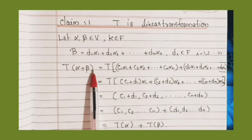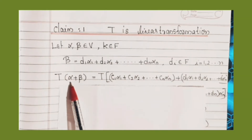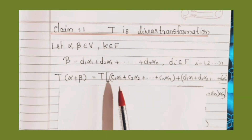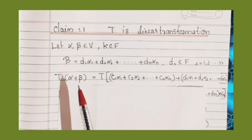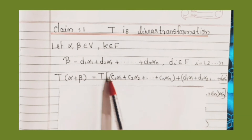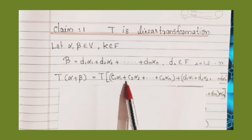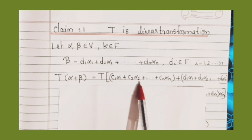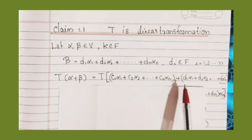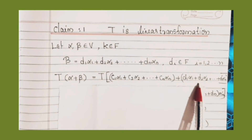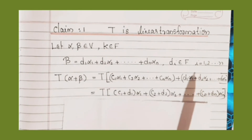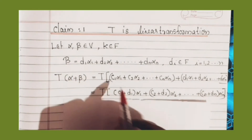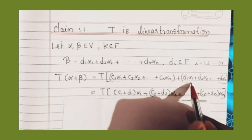Consider T(α + β). We write α = c₁α₁ + c₂α₂ + ... + cₙαₙ and β = d₁α₁ + d₂α₂ + ... + dₙαₙ. So T(α + β) = T(c₁α₁ + c₂α₂ + ... + cₙαₙ + d₁α₁ + ... + dₙαₙ). The term for α₁ gives c₁α₁ + d₁α₁.